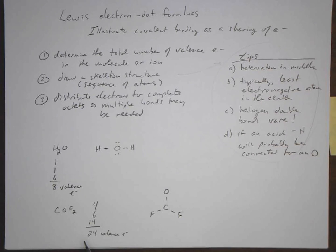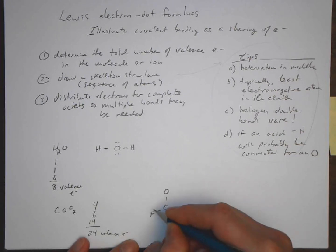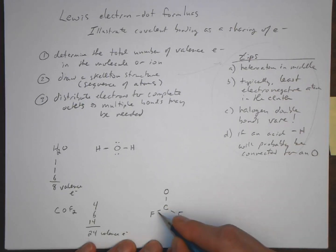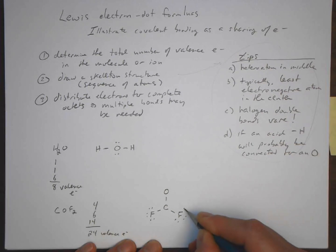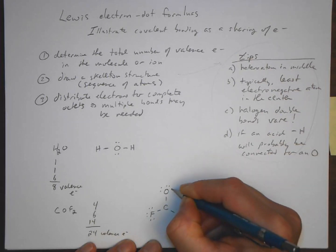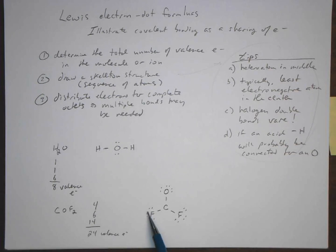We need 24 valence electrons total. Starting with the skeleton bonds — that's 6 electrons represented — we distribute the remaining electrons to complete octets on fluorine and oxygen. Adding lone pairs, we account for all 24 electrons. However, we check whether carbon has a complete octet.